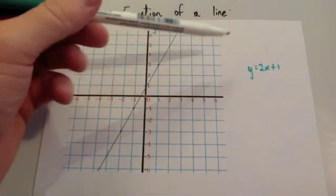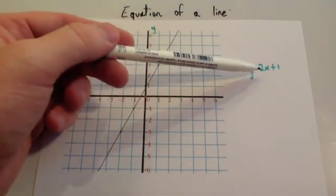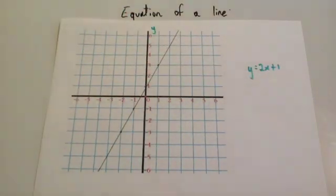So that's the line, and the equation is y equals 2x plus 1, where 2 is the gradient and 1 is the y-intercept.